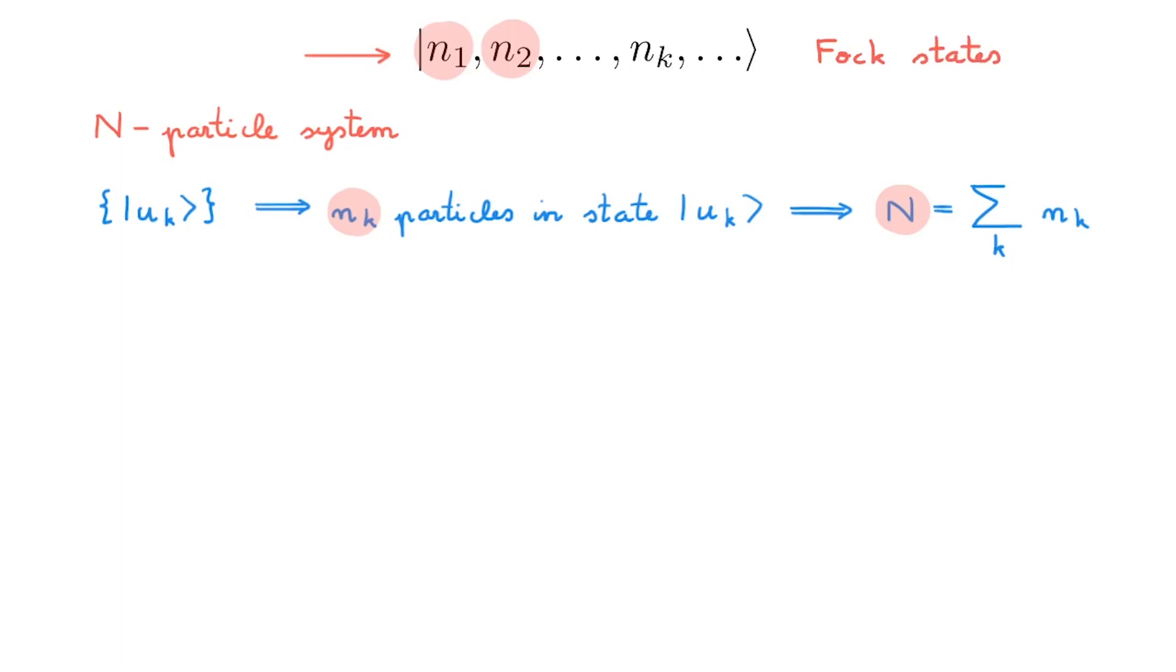You will remember from the video on the symmetrization postulate that for bosons the state space to which these Fock states belong is made of totally symmetric kets of n particles and we call this subspace V plus. For fermions the state space to which the Fock states belong is made of totally anti-symmetric kets of n particles and we call it V minus. We will represent the collective state space of a system of identical particles whether it is made of bosons or fermions by a calligraphic F with a capital N sub-index indicating the total number of particles n in the system.